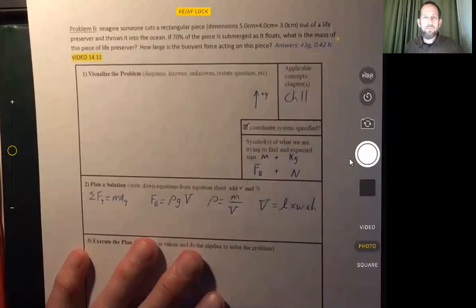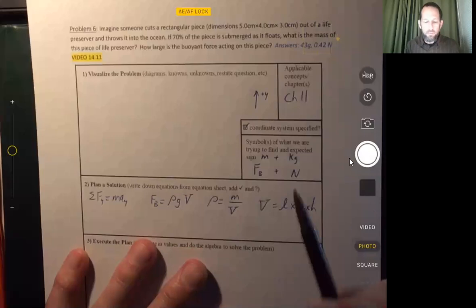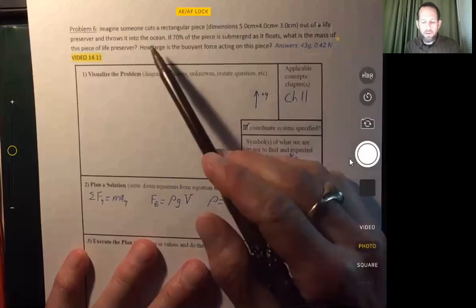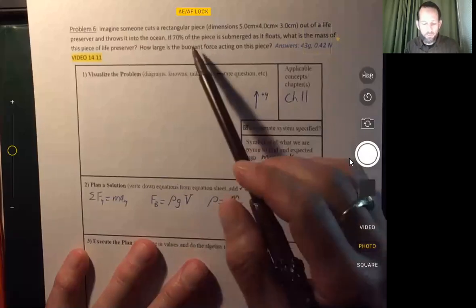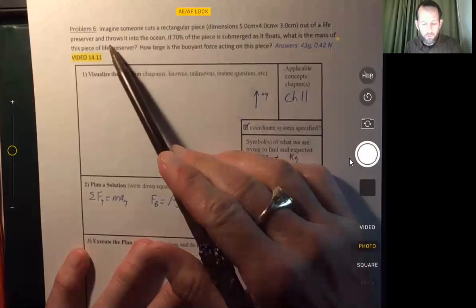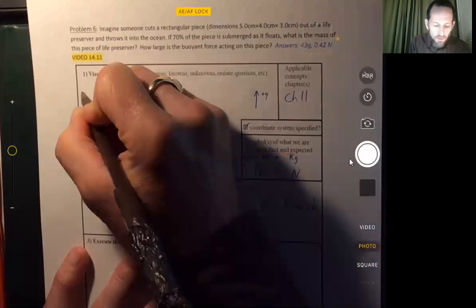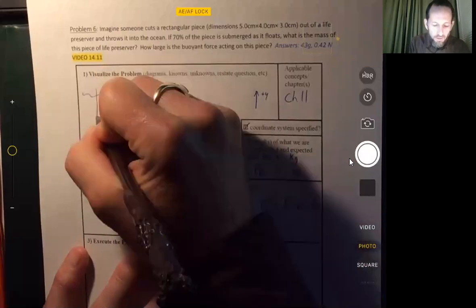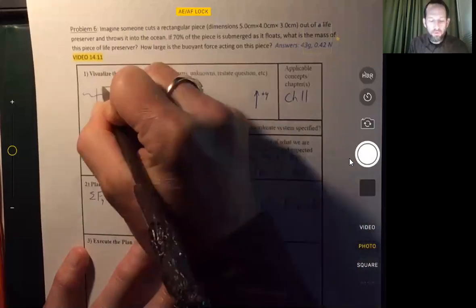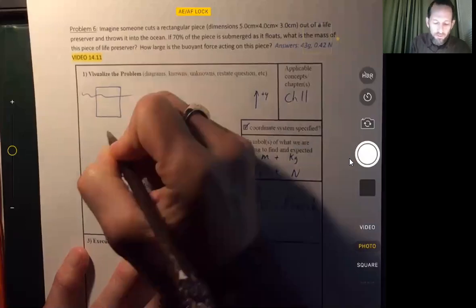Alright, hello everyone. Let's take a look at this problem where we have a rectangular piece of a life preserver. I don't know why someone would cut apart a life preserver, but anyway, here we go. And 70% of it is below the surface. So there's a little sketch of the situation.